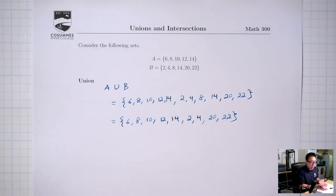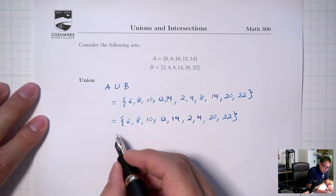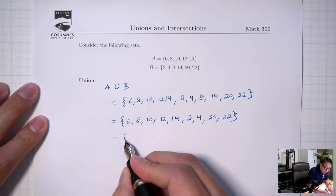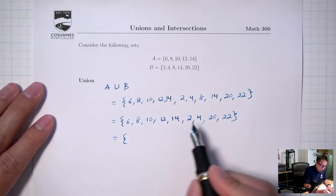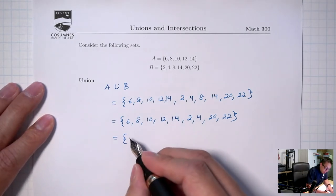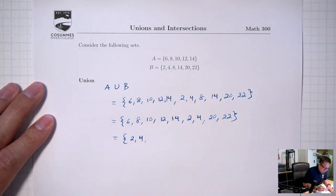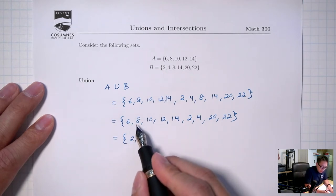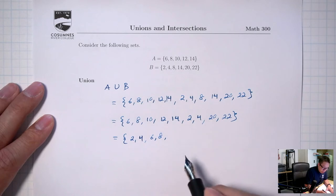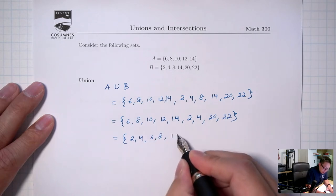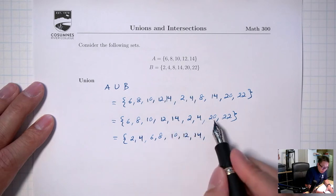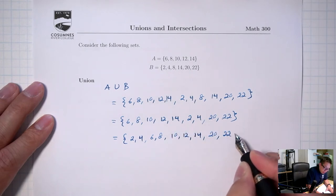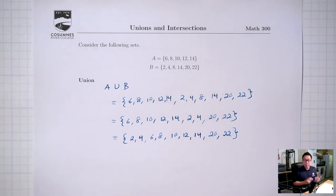Now I have a set without any repeats, and then I'm going to go one extra step and put things in order. You don't have to, but it's going to make things simpler later on. So in order: 2 and 4 should go first, and then 6, 8, 10, 12, 14, and then 20, 22. And that's the union.